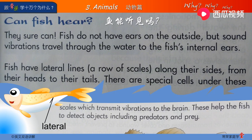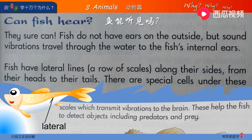内部的耳朵。看这一句：Fish have lateral lines, a row of scales along their sides. 好，鱼有一个侧线，也就是一排鱼鳞，在它们的身体的侧面。这个lateral lines就叫侧线，along their sides就是在它们身体的侧面。